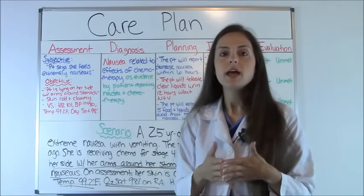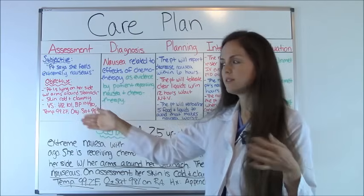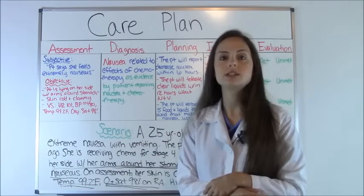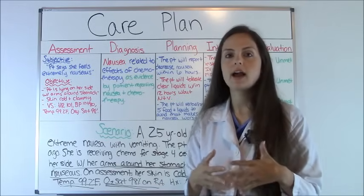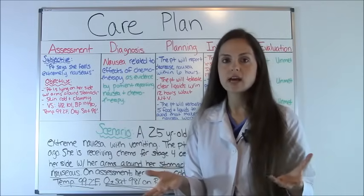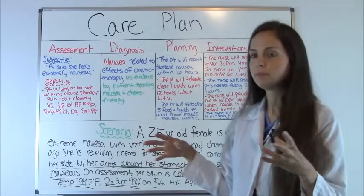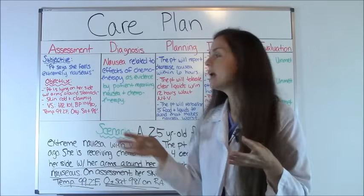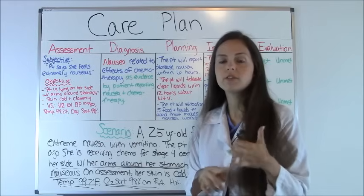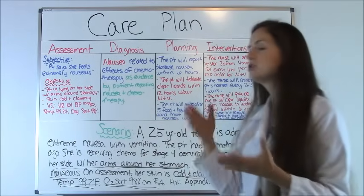Objective data is something you can prove — something measurable that you can see on assessment, like lab values and vital signs. In this scenario, objective data includes: the patient lying on her side with her arms around her stomach (you can see that walking into the room); her skin is cold and clammy, which you felt on assessment. Vital signs are always objective data because they're measurable: heart rate 101, a little tachycardic; blood pressure 120 over 80, normal; temperature 99.2°F, a little warm — probably she's dehydrated from vomiting; and oxygen saturation is normal at 98%.